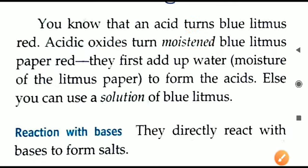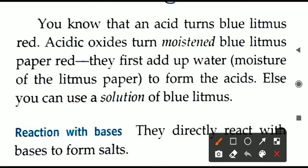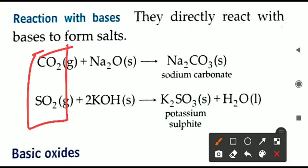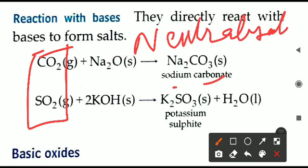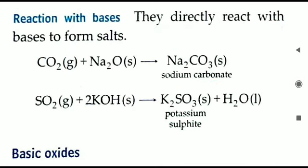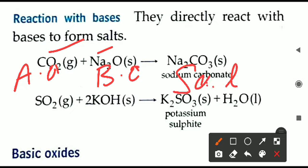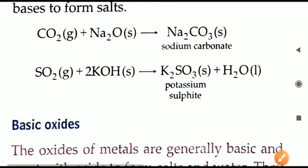When acidic oxides like CO2 and SO2 are reacted with bases, they produce salt — this is a neutralization reaction. Acidic oxide plus basic oxide produces a salt. The salts produced are generally solid. That concludes the discussion on acidic oxides; we now move to basic oxides.